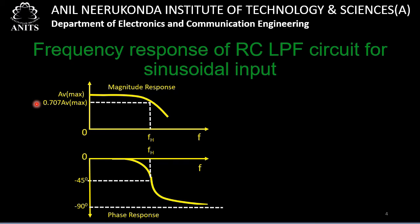fH is also called the 3 dB frequency. The bandwidth of the RC low-pass filter circuit is given as fH (i.e., fH − 0 = fH). The bandwidth criterion is the range of frequencies over which the gain is at least 1/√2 times the maximum gain. This represents the worst case — as a developer we are promising the customer that our circuit can provide at least 70% of the maximum gain over the given range of frequencies, hence we define bandwidth based on this worst-case criterion.